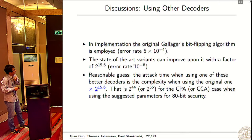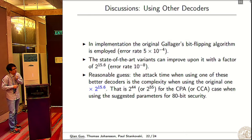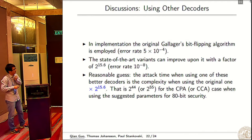In our implementation, we use the original Gallagher's bit flipping algorithm, and definitely this is not the optimal one. State-of-the-art variants can improve with a factor like this. We can do a reasonable guess that the attack time when using one of these better decoders is the complexity when using the original times this factor. That is 2^44 for the CPA case and 2^55 for the CCA case if we use the suggested parameters of QC-MDPC for 80-bit security.